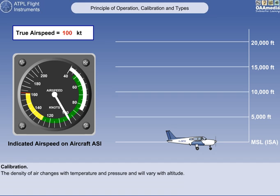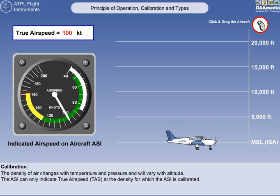Let us look now at the matter of calibrating the ASI. Although we can say that dynamic pressure is proportional to speed, the formula dynamic pressure equals a half rho V-squared shows us that dynamic pressure is also proportional to the air density. The density of air changes with temperature and pressure, and will therefore vary with altitude. If the air is less dense, the airspeed required to produce the same dynamic pressure will have to be greater. Remember, the ASI is actually sensing dynamic pressure, which is being represented on the dial of the ASI as airspeed.